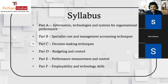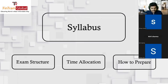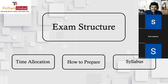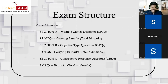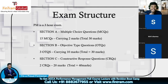Now, moving on to the exam structure — how will questions be tested in your PM exam? It's a three-hour exam with three sections. Section A contains multiple choice questions — 15 MCQs, each carrying 2 marks, giving a total of 30 marks. Section B has objective type questions, or OTQs — small scenarios with five MCQs related to each scenario.